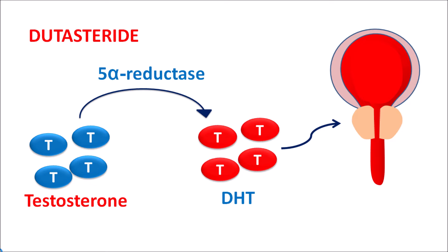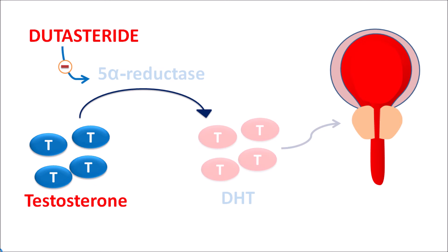In such conditions, dutasteride can be used as an inhibitor of the 5-alpha reductase enzyme. By inhibiting this enzyme activity, DHT levels are reduced, which reduces the prostate enlargement, resulting in decreased prostate size and an increase in urinary flow.